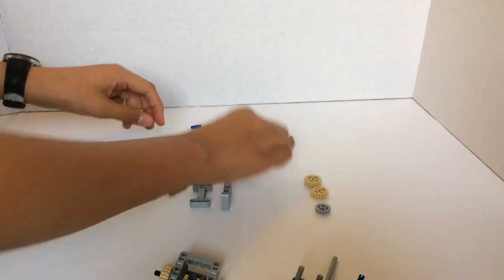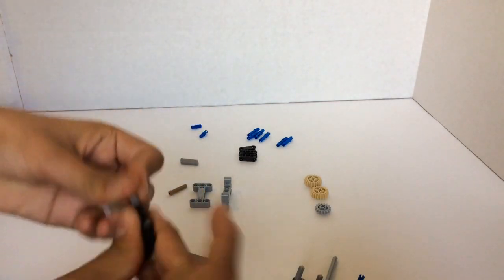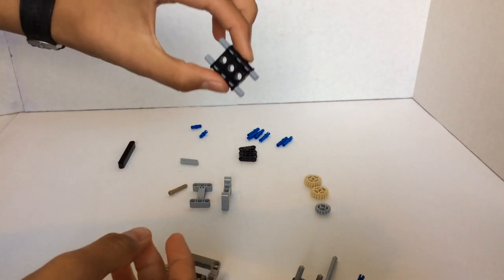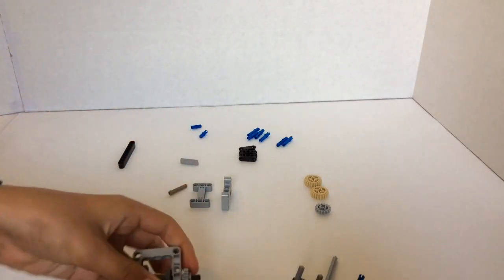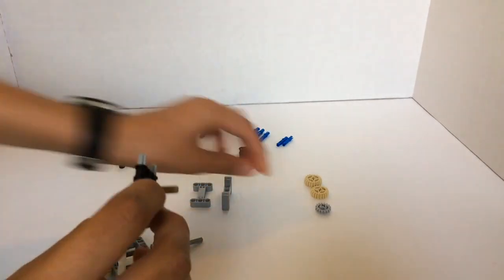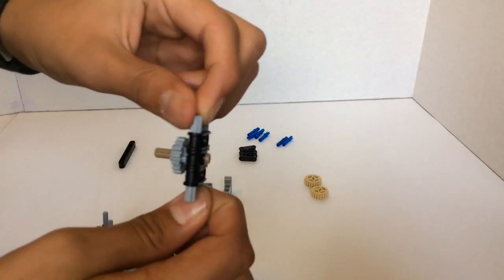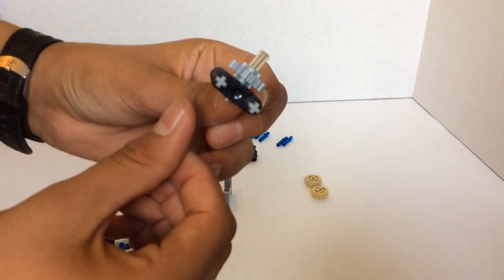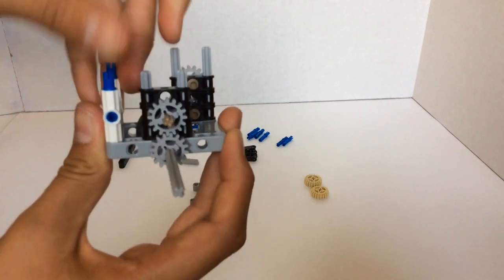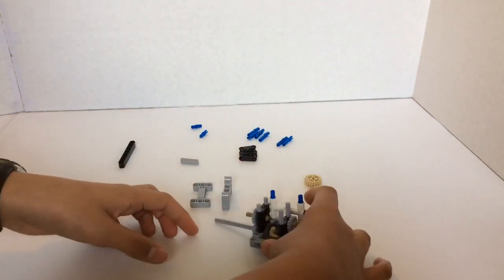Then you'll take three more of these and do the same thing but with the five stud pins. Make sure it's all centered. And then you're going to put that with a three stud pin. And then you're going to put that right here so they mesh. And then you're going to set that aside.